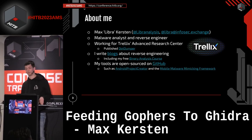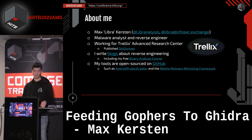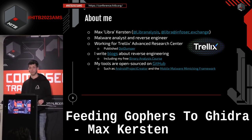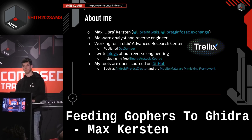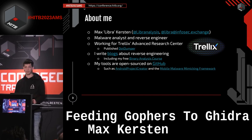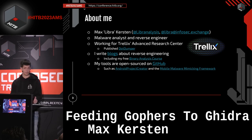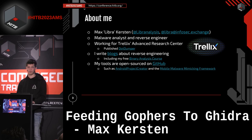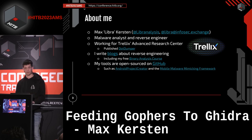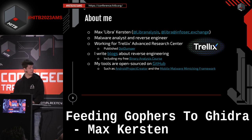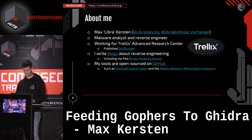My name is Max Kerst. I go by the nickname Libra, and I'm a malware analyst and reverse engineer for Trellix within the Advanced Research Center. We get to do all kinds of cool research in a variety of topics. One of the things I worked on is .dumper, an automatic unpacker for .NET malware, which we open sourced. I tend to write blogs about reverse engineering and try to make my work as open source as possible. In the past I've also worked on some Android-related things.